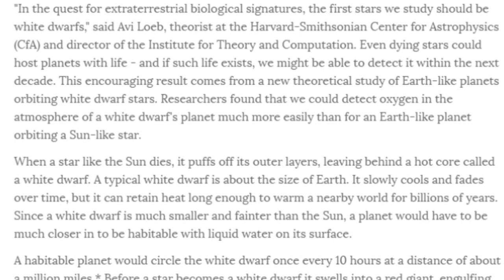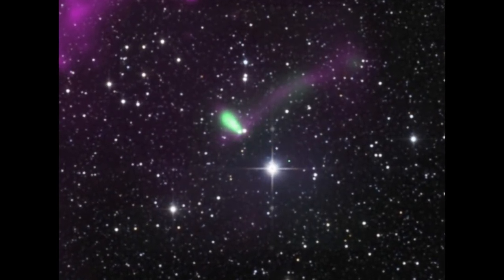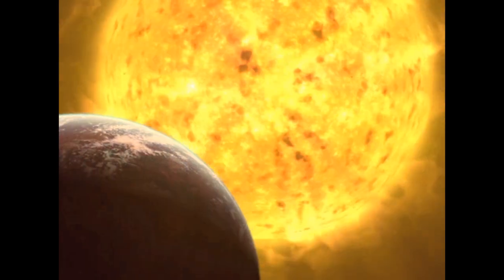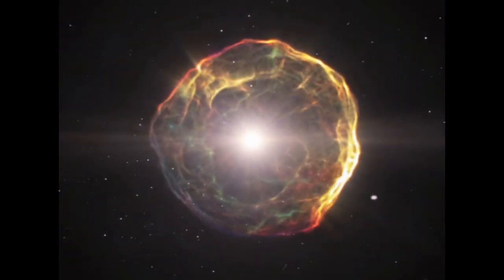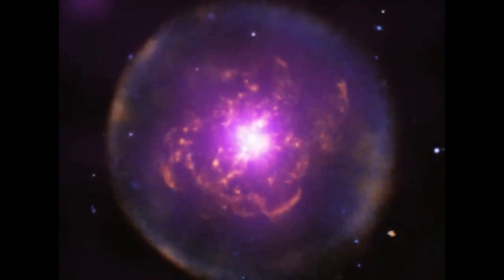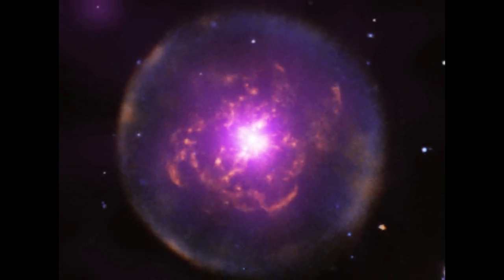Researchers found that we could detect oxygen in the atmosphere of a white dwarf's planet much more easily than for an Earth-like planet orbiting a sun-like star. Wait, so they haven't found a planet? They did find a planet? I don't know. When a star like the sun dies, it puffs its outer layers, leaving behind a hot core called a white dwarf. A typical white dwarf is about the size of Earth. It slowly cools and fades over time. It's all theoretical and computated, but it can retain heat long enough to warm a nearby world for billions of years. Since a white dwarf is much smaller and fainter than the sun, a planet would have to be much closer in to be habitable with liquid water on its surface.